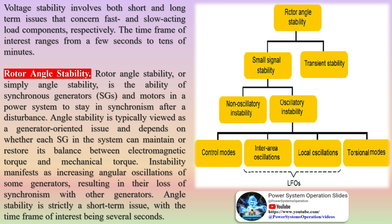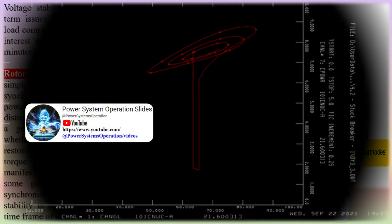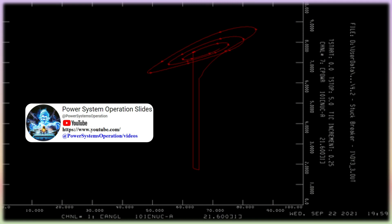If the voltage is too high, equipment will operate too quickly, reducing its lifespan. If the voltage is too low, it can lead to poor performance of electrical equipment, such as dimming or flickering light bulbs. Voltage stability involves both short and long-term issues concerning fast and slow acting load components respectively, with a time frame of interest ranging from a few seconds to tens of minutes.